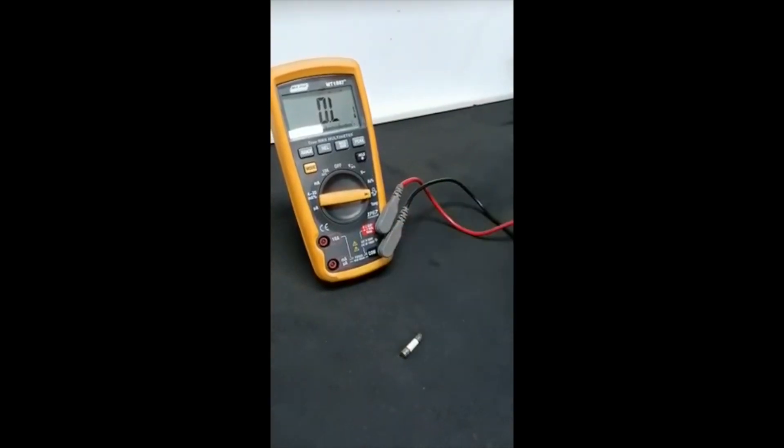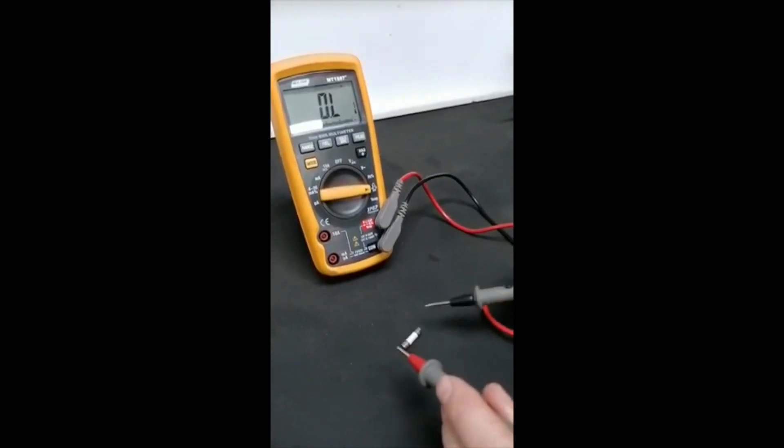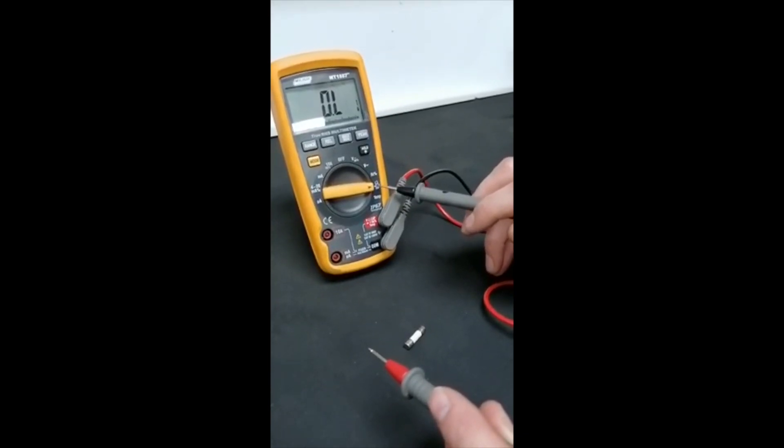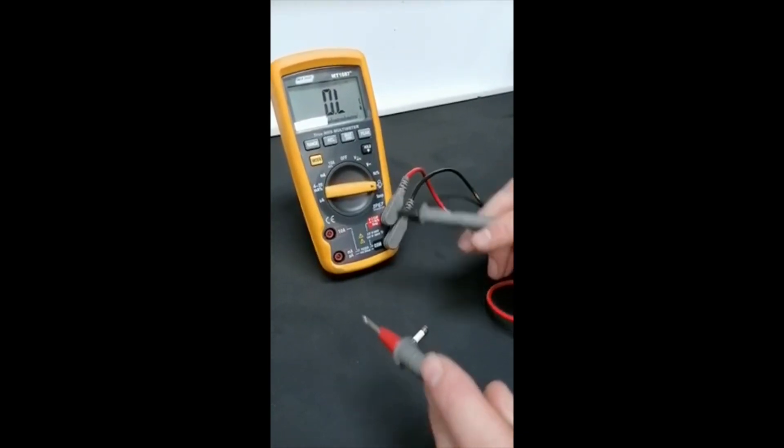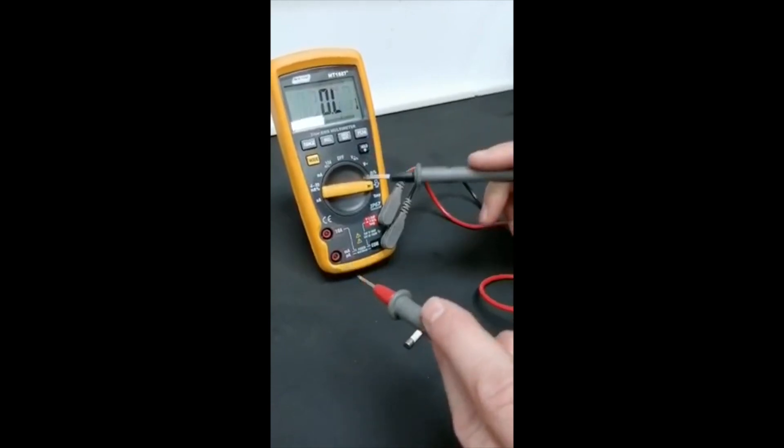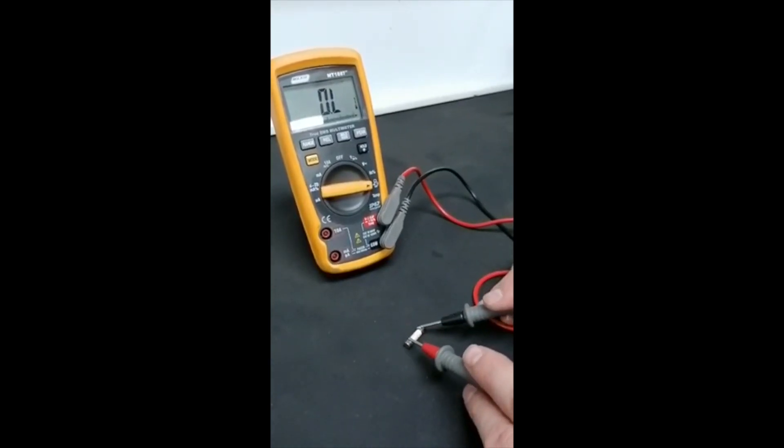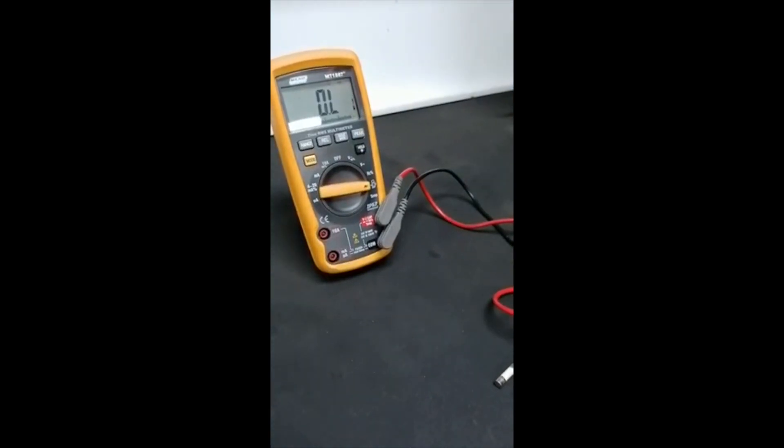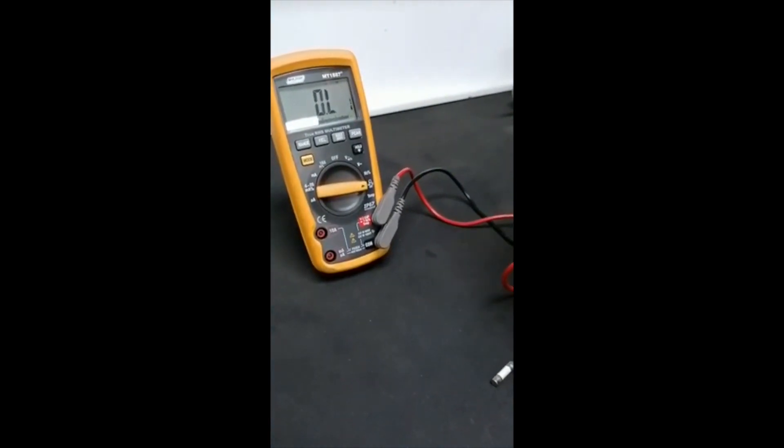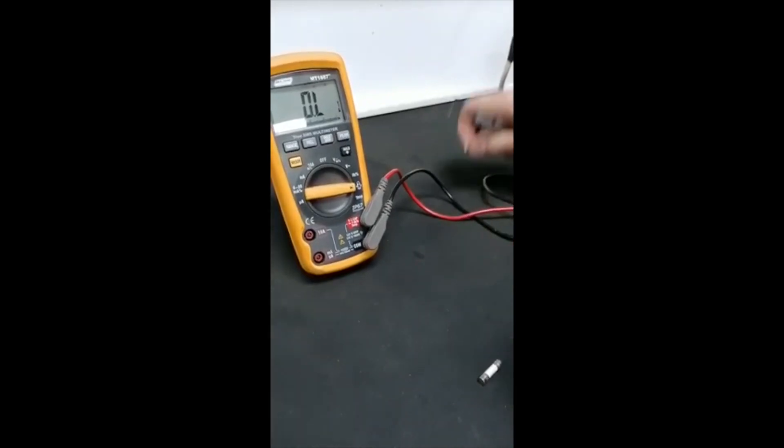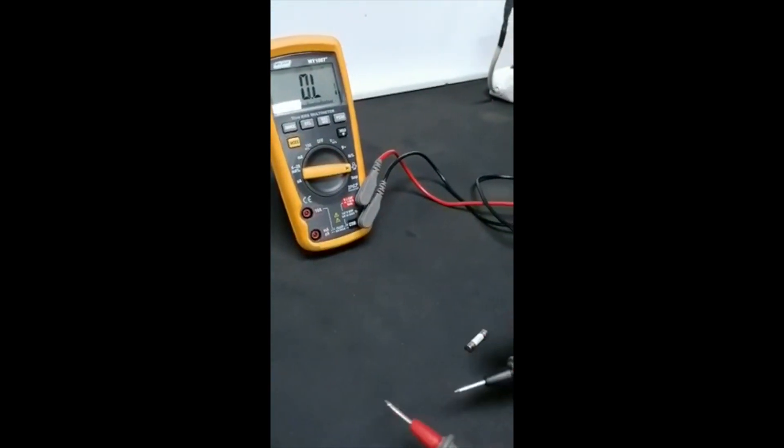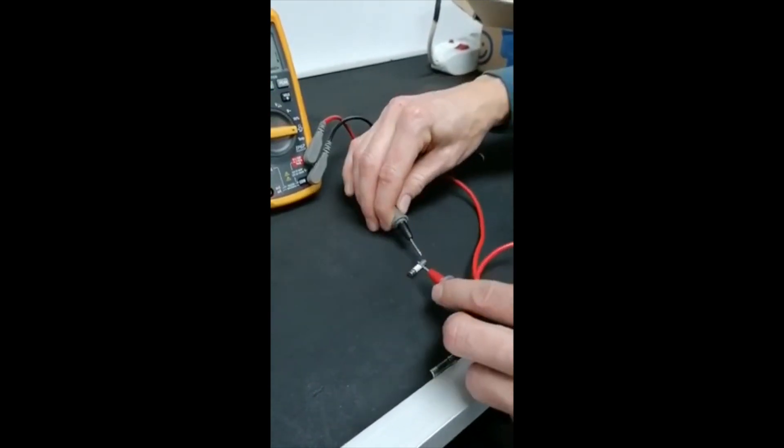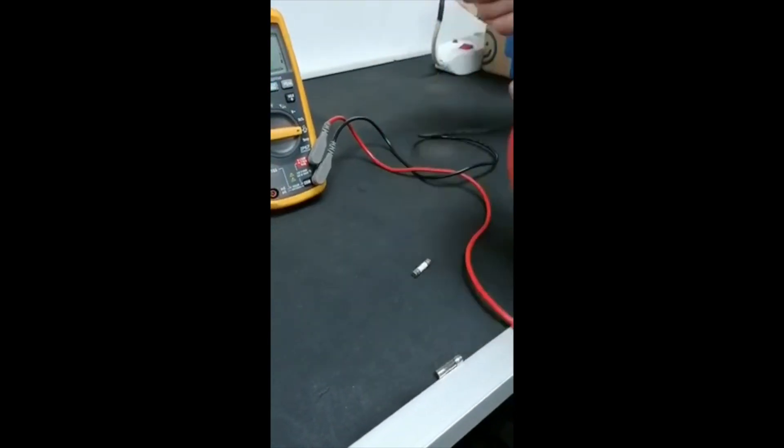I'm just going to do a continuity test on a fuse. You would see there, there's ohms and diode test and a little speaker. So you would put it on there, if you put the two testers together, it beeps. So this fuse is working, I'll get a beep. This will be an example of a broken fuse, no beep.